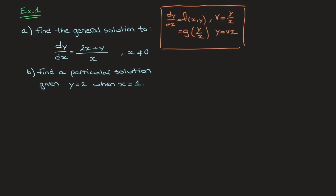Let's go ahead and work through this first example. The first thing we're asked to do is find the general solution to dy/dx which equals 2x plus y over x. Looking at this equation, it quickly becomes clear that we're not going to be able to solve it by separating the variables.